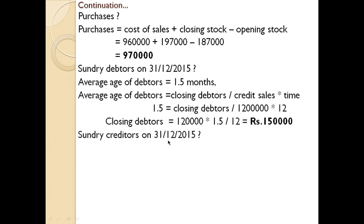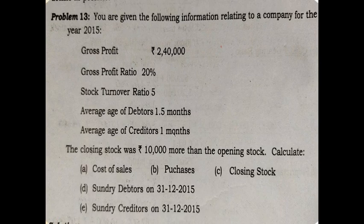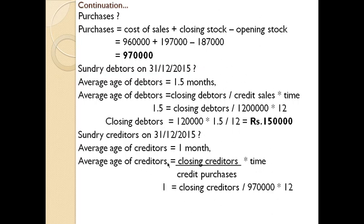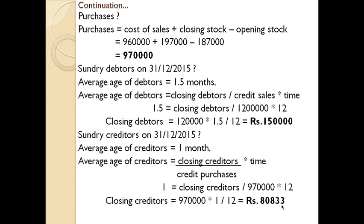Next, find sundry creditors as on 31/12/2015. Similarly, the only detail given regarding creditors is average age of creditors, which is 1 month. Using the same equation: average age of creditors equals closing creditors divided by credit purchases into time. So 1 equals closing creditors divided by 9,70,000 into 12. Solving, you will get closing creditors equal to 80,833.